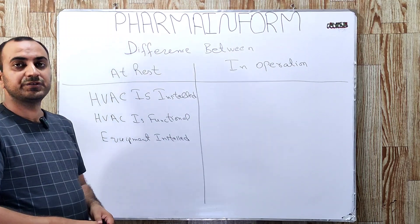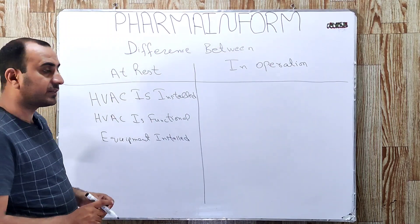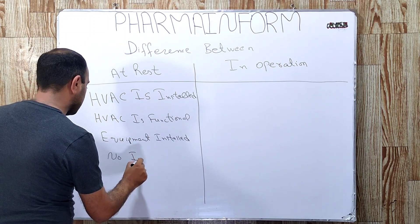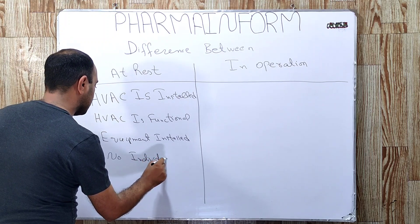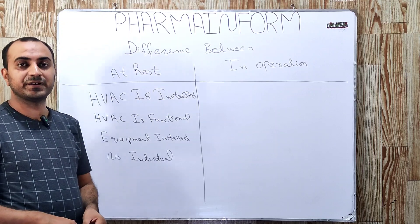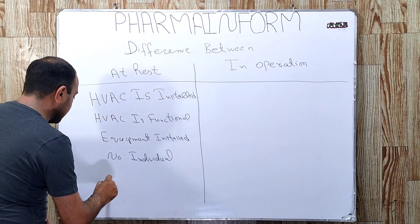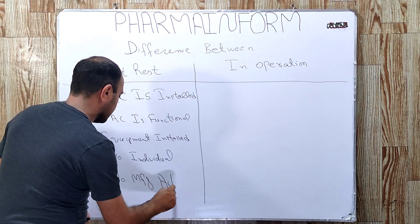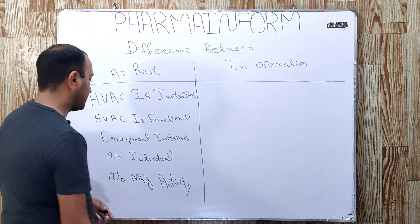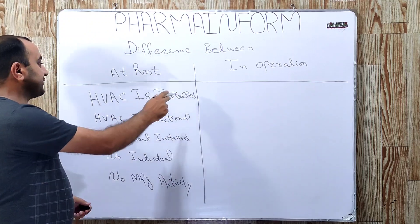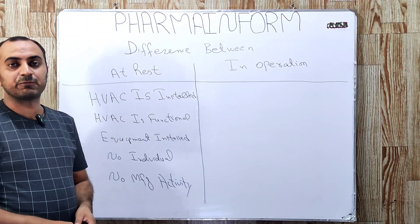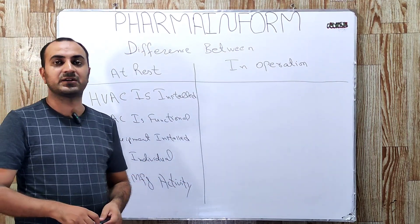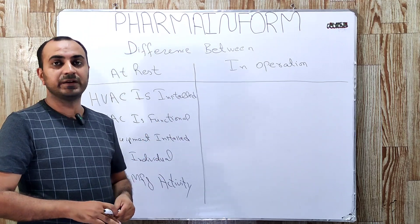But there is no individual present in the clean room — no individual is present and no manufacturing activity is performed. To summarize: HVAC is installed, HVAC is functional, equipment is installed, no operator is present in the clean room, and no manufacturing activity is performed.